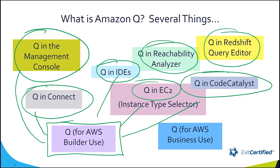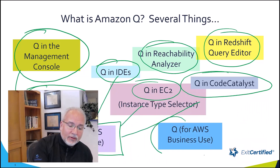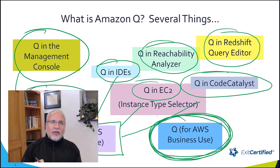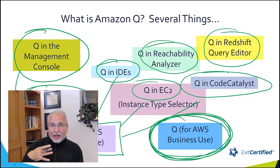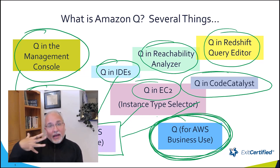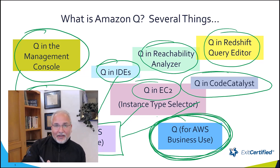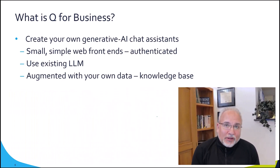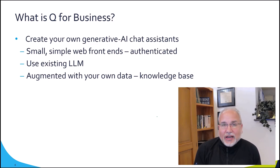And if that's all Q was, that would be fine. But my presentation is going to be about this — this box over here is different: Q for AWS Business use. This is going to allow us to create our own application, embellished with whatever knowledge base we define, and create our own chat application. This is not about getting to use AWS better — it's about working with our business domain better.